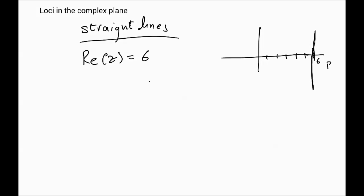That's the same as saying that you have a straight line that goes through 6. This would be the real axis and the imaginary axis. Just like we would say x equals 6 and we draw that, it's a straight line parallel to the y-axis.